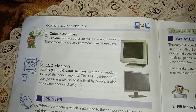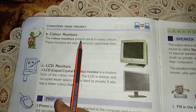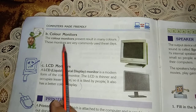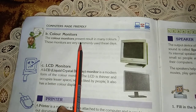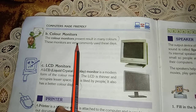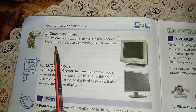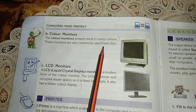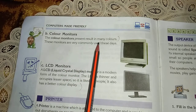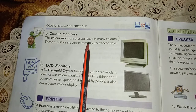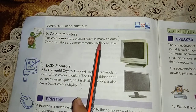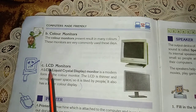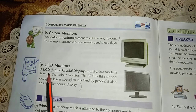The second type is color monitors. Color monitors present results in many colors and are very commonly used these days. Unlike monochrome black and white displays, these generate information in all colors.